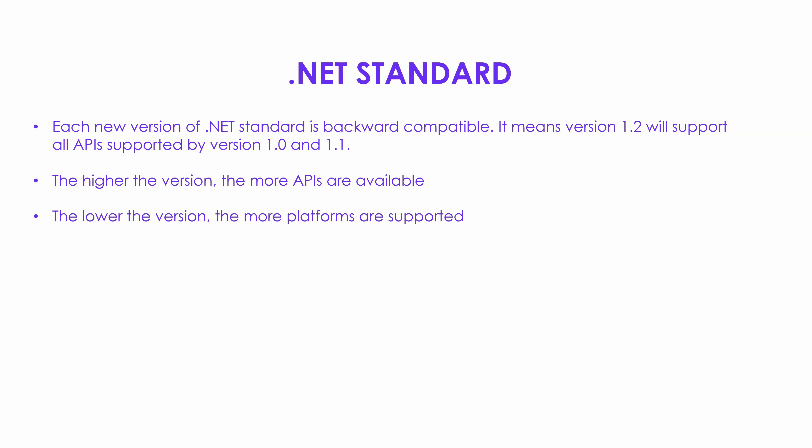There are a few more points about .NET standard which you should know. Each new version of .NET standard is backward compatible with the previous version. For example, version 1.2 will support all the APIs already supported by version 1.1 and 1.0.